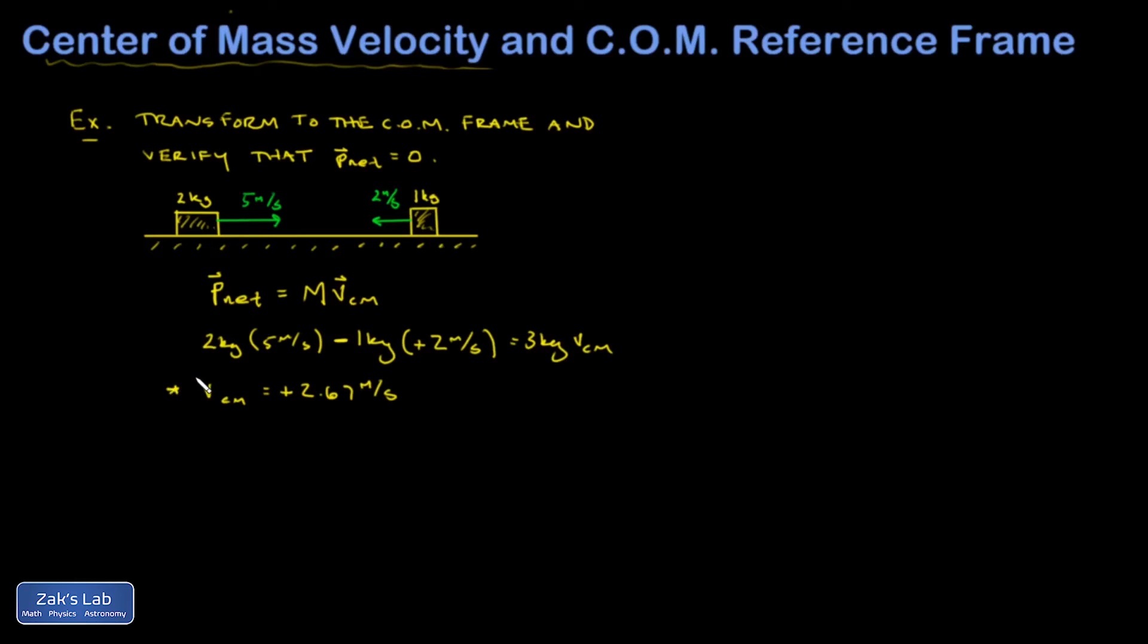All right, now the whole point of this is that I want to transform the problem into a reference frame that's moving to the right at 2.67 meters per second. So I guess I'll mark a little center of mass here and put a velocity vector on it. And say in the lab frame, that's moving to the right at 2.67 meters per second. But now I'm going to start running that fast.